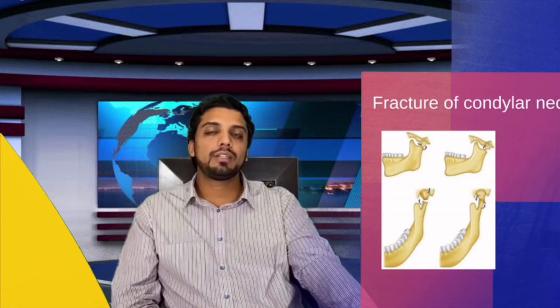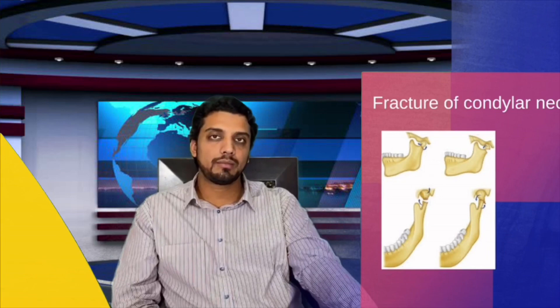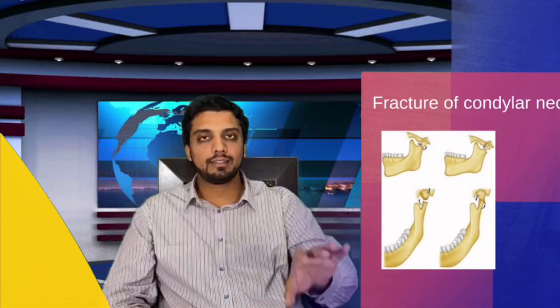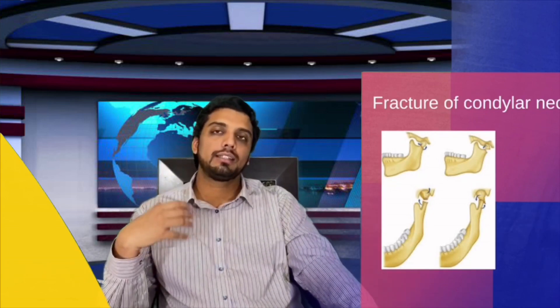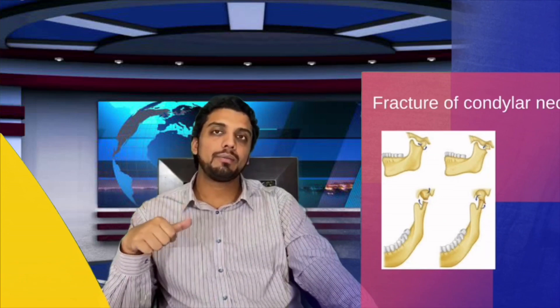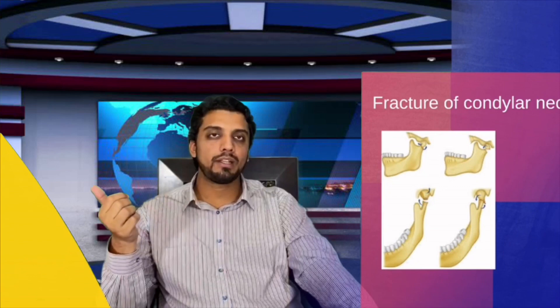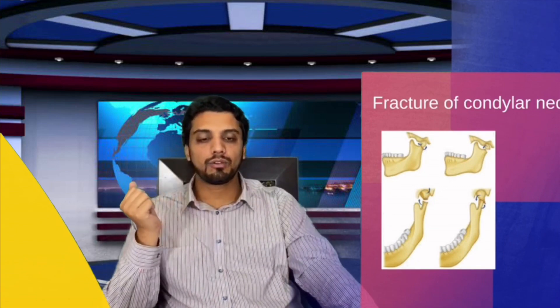Trauma is one of the most common reasons for facial asymmetry, and the reason is restriction of mandibular movement — not the fracture itself. This is according to the functional matrix theory: function determines the shape of the bone. If function is impaired and muscles around the mandible are not functioning properly, it leads to asymmetric growth of the mandible.